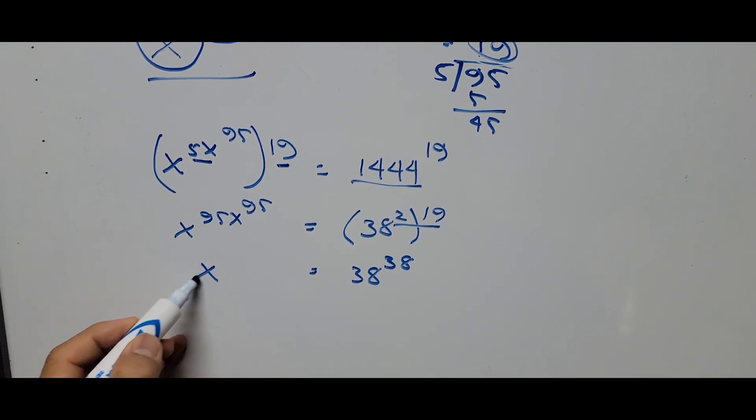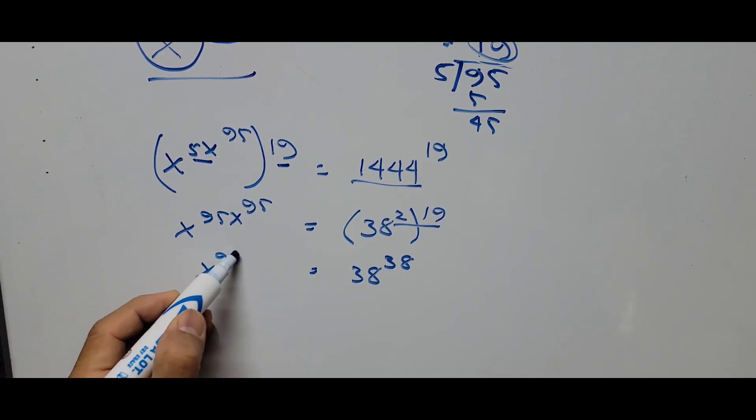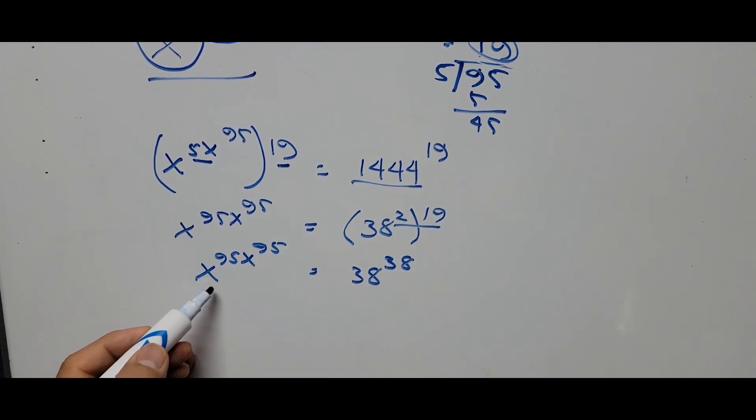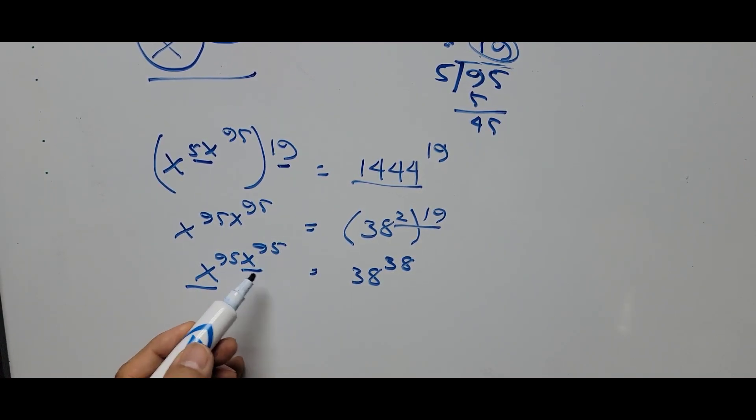side remains the same: x raised to 95 power, x raised to 95. So if you notice, the base is now exactly the same as the exponent, the same here on the right. So therefore, x raised to the power...